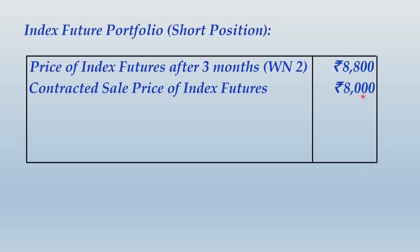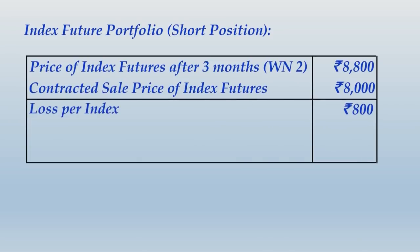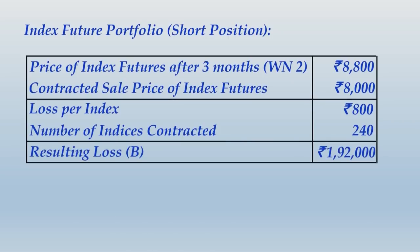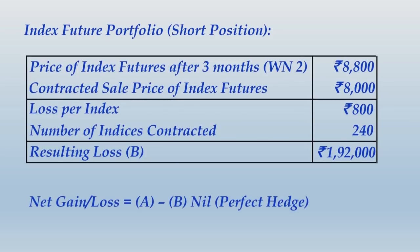You contracted to sell at Rs. 8,000, but the settlement price is Rs. 8,800. You agreed to sell something whose price has risen — if you have a short position and the price rises, you incur a loss. Loss per index = Rs. 800, and with 240 indices contracted, the resulting loss is Rs. 1,92,000. Netting the stock portfolio gain and the index futures loss again gives nil — a perfect hedge.